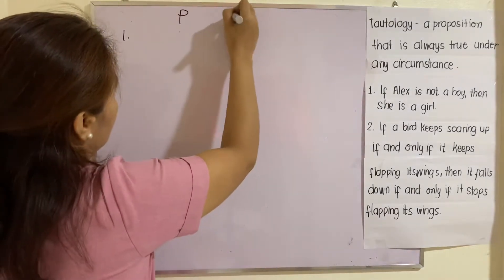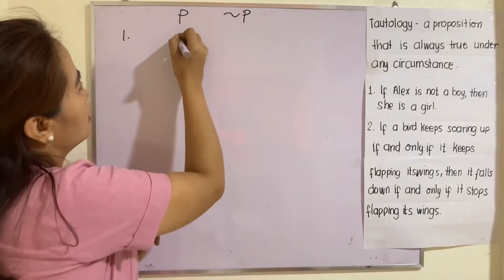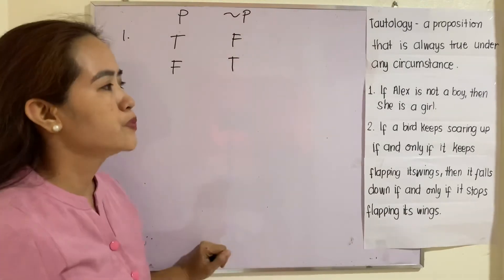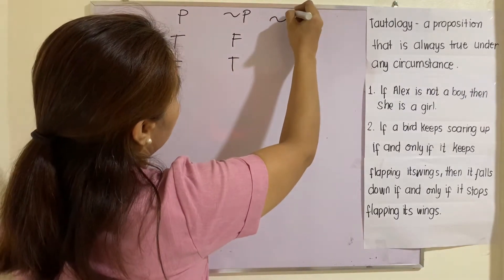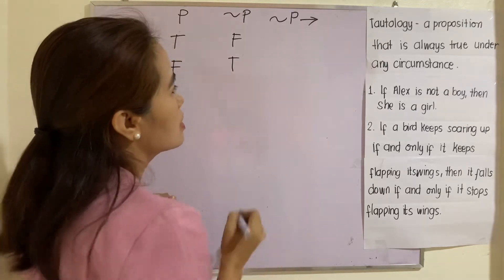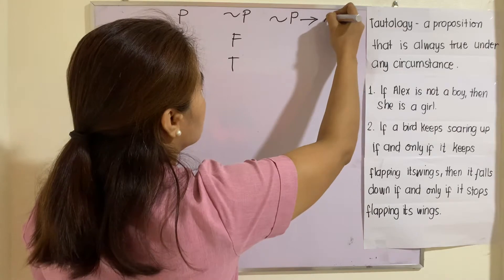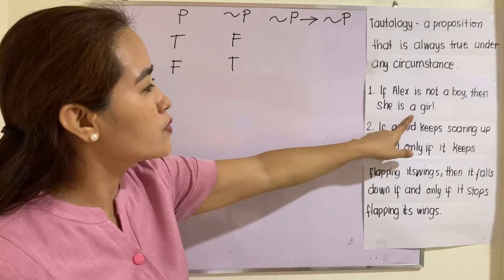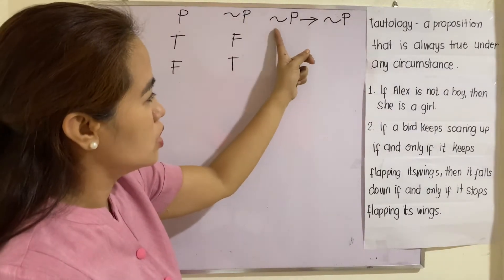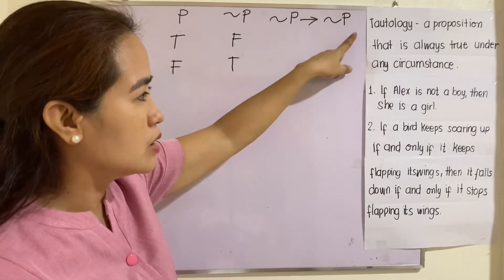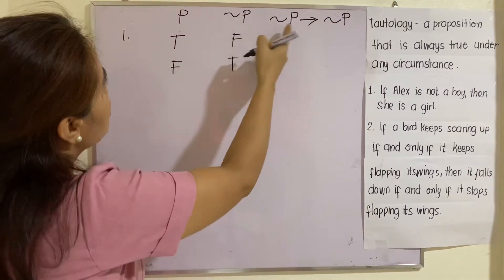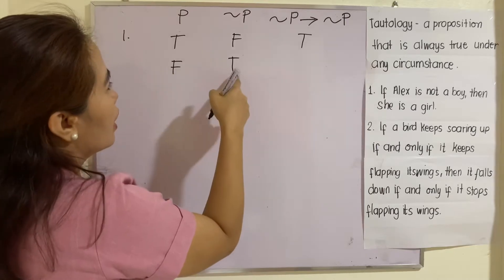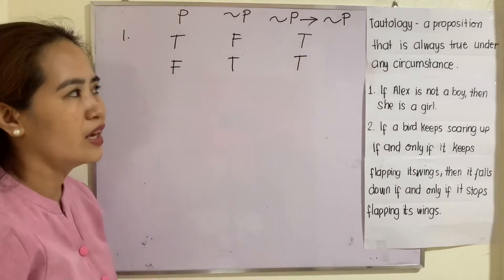First, 'Alex is a boy' is the proposition that can be true or false. To negate it, not true will be false and not false will be true. So 'Alex is not a boy' implies that she is a girl. The proposition here is P: Alex is a boy, and the conclusion is she is a girl. So not P implies not P — T implies F is true, and F implies T is also true. Therefore this one is a tautology because it is always true.